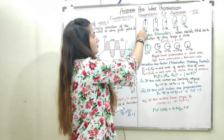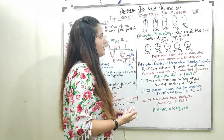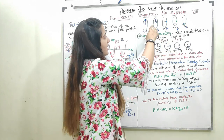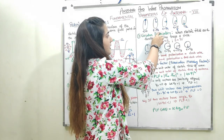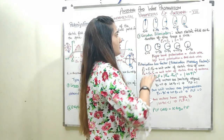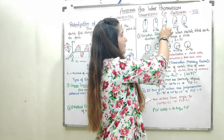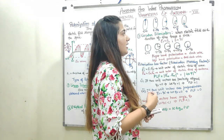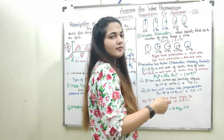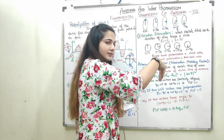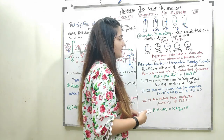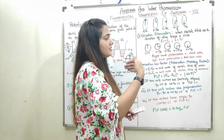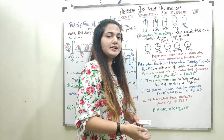At time t = 0, we have only the Ey component, which is taken to be larger. As time increases, the x component begins to appear. At t = T/8, we have both x and y components. At t = T/4, we have only the x component. At t = 3T/8, we have both components again. At t = T/2, we have only the y component. This rotation is called right-hand or clockwise polarization. If the wave rotates in the opposite direction, it is called left-hand or anti-clockwise polarization.